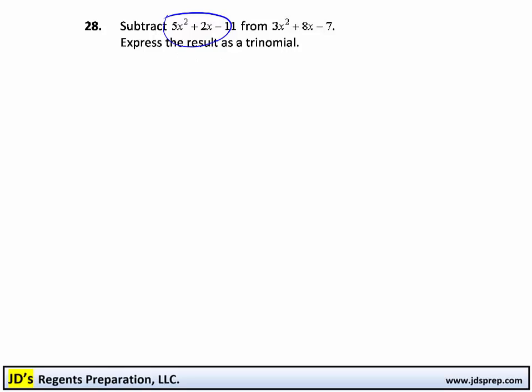To start this problem, we need to first know that we are subtracting this first trinomial from the second trinomial. So we will have 3x squared plus 8x minus 7, and we are subtracting the 5x squared plus 2x minus 11 from it.